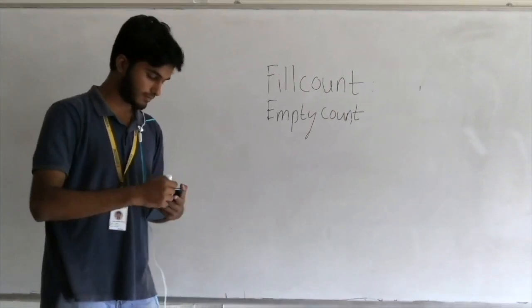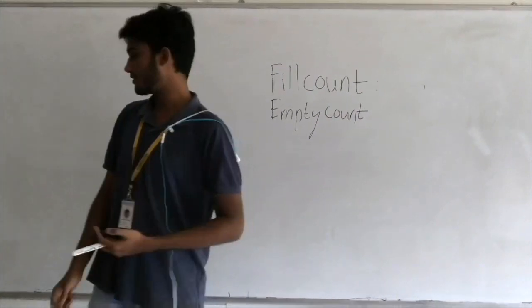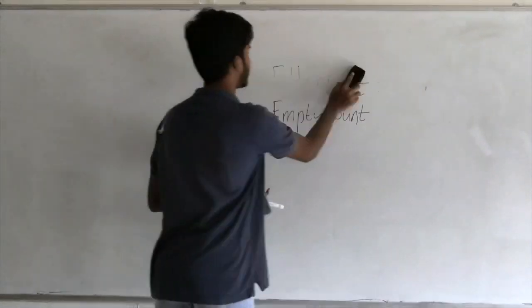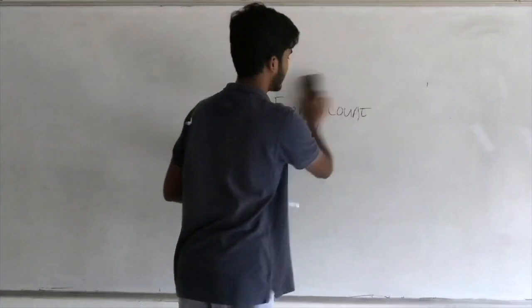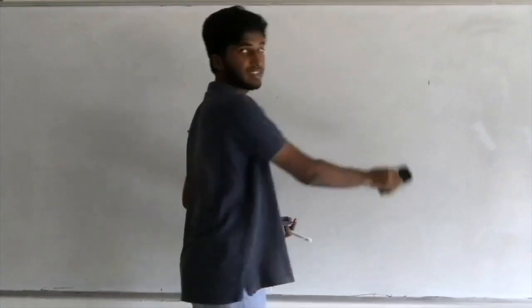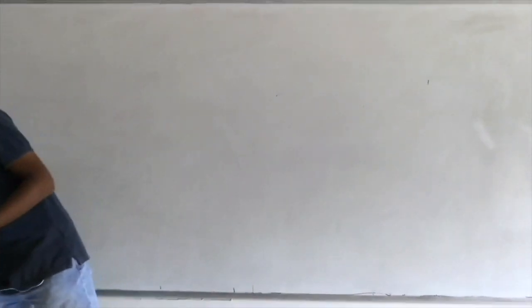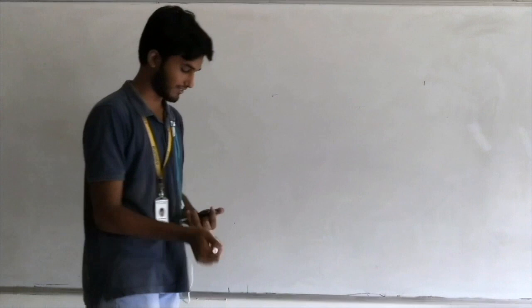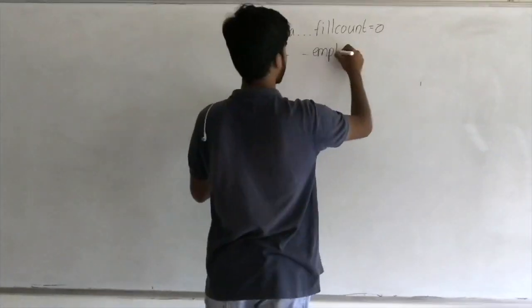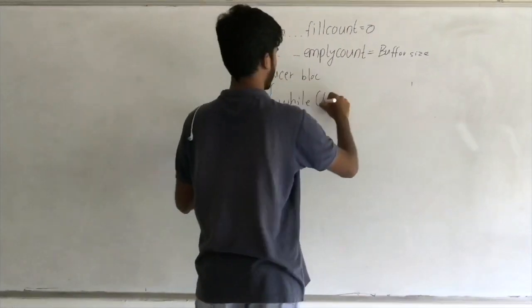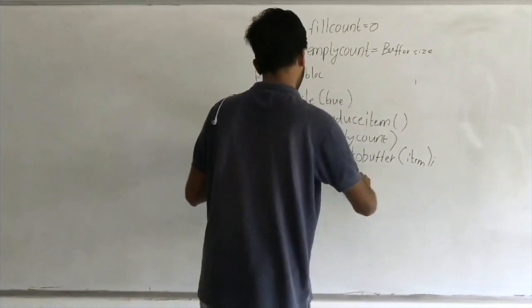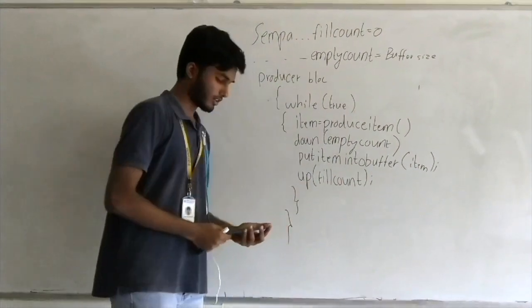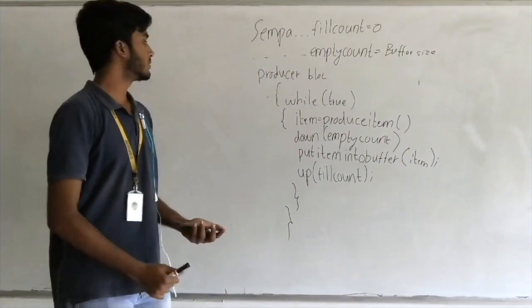Looking at the code in the PPT presentation: we again have the while-true statement, so the block runs infinitely. Item equals produce-item, so the producer produces an item. When it does, empty count is decremented by one, occupying one empty space. This is the producer block.